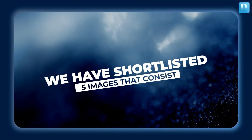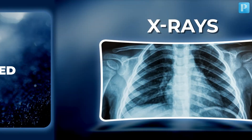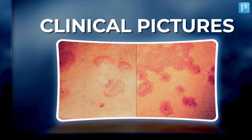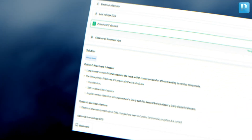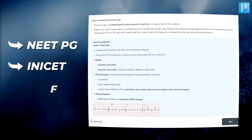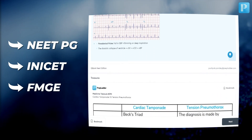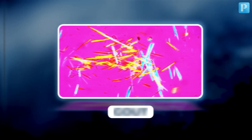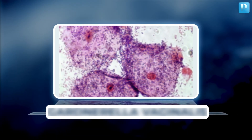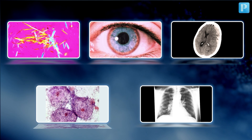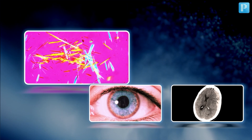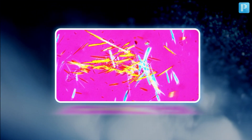We have shortlisted 5 images that consist of X-rays, CT scans, and clinical pictures, and have been examiners' favorites in the past NEET-PG, INICT, and FMG exams. We will be sharing the key findings of these images along with the disease name. Let's see if you can decode the disease before the name is revealed.